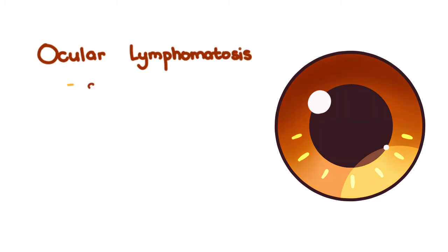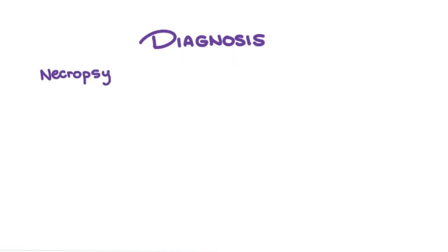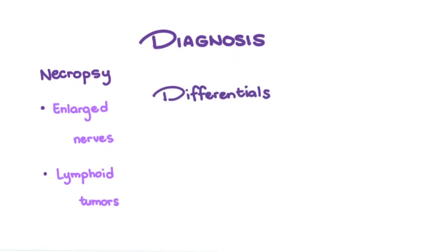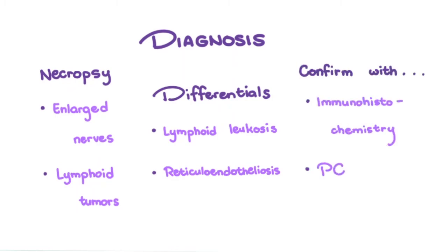Ocular lymphomatosis results in gray irises and can lead to partial or total blindness, usually occurring in older birds. For diagnosis, necropsy on a number of birds that have succumbed to the disease may reveal enlarged nerves and lymphoid tumors. It is important to differentiate Marek's disease from lymphoidleucosis and reticuloendotheliosis, two diseases with similar lesions. To confirm the diagnosis, immunohistochemistry and PCR may be done.